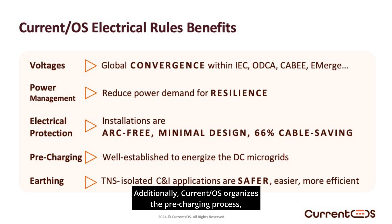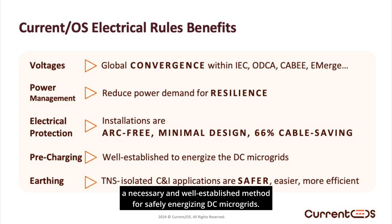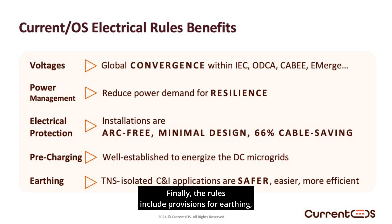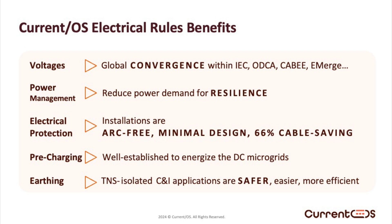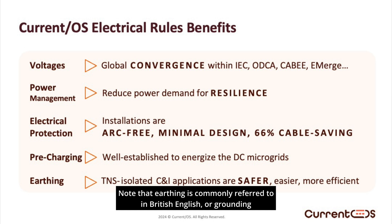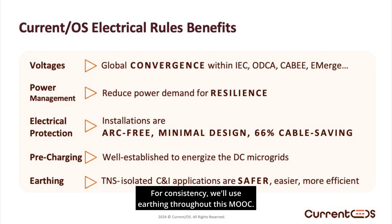Additionally, Current OS organizes the pre-charging process, a necessary and well-established method for safely energizing DC microgrids. Finally, the rules include provisions for earthing, recommending the TNS system alongside isolation between AC and DC installations. This approach is specifically tailored to the requirements of commercial buildings and installations. Note that earthing is commonly referred to in British English, or grounding in American English. For consistency, we'll use earthing throughout this MOOC.